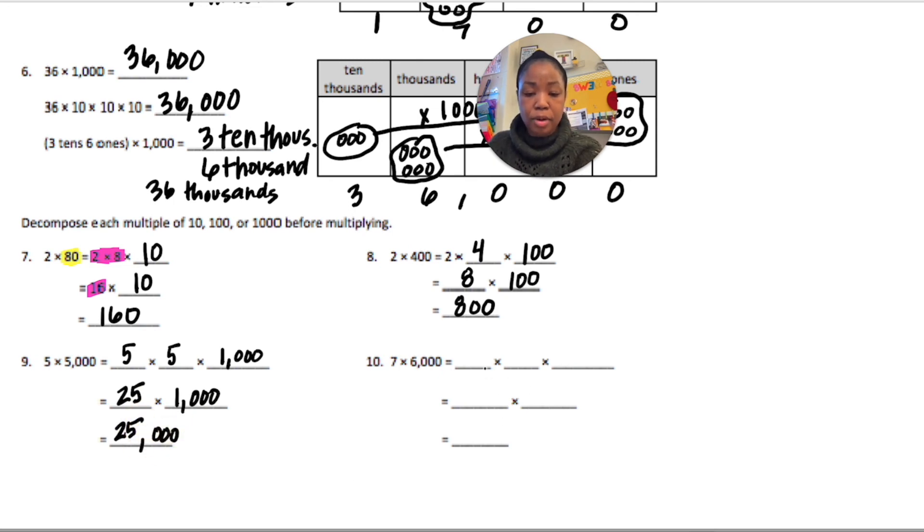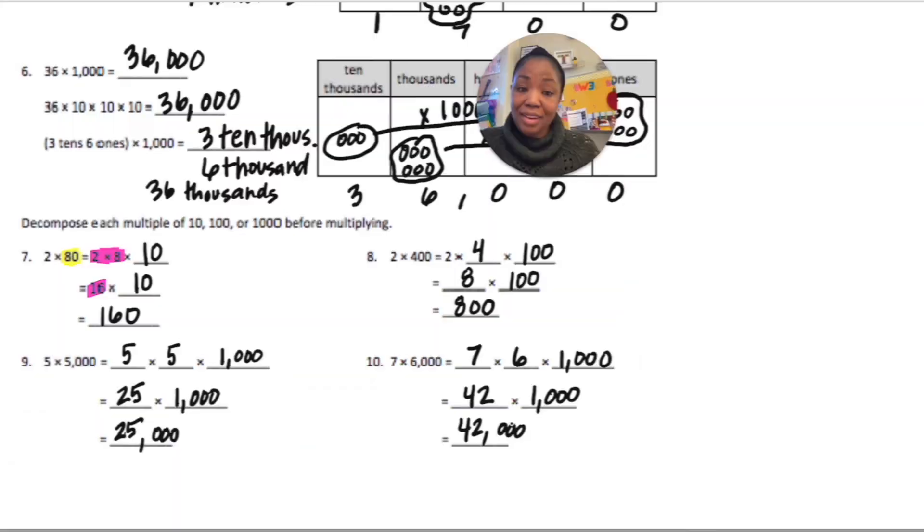For number 10, we have 7 times 6,000. So, that's 7 times 6 times 1,000. 7 times 6 is 42 times 1,000. That's 42,000. All right. Thanks so much for watching the video. I hope this helped you do your homework. Till the next time, keep learning, and I will see you soon. Take care.